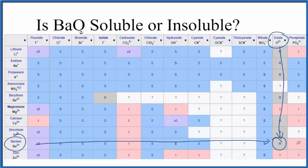That R means that barium oxide, BaO, it's going to react with water. So it's not really soluble or insoluble. When you put it in water, a chemical reaction takes place.